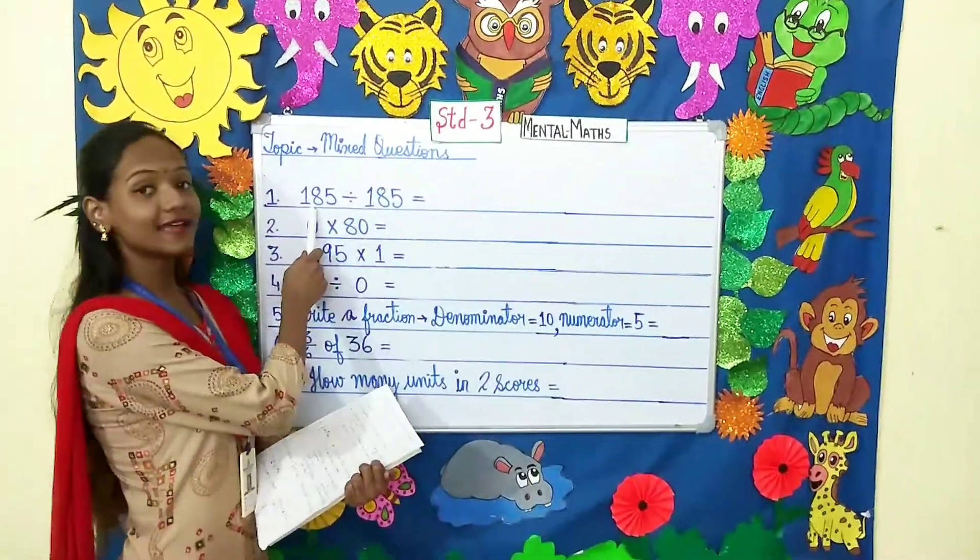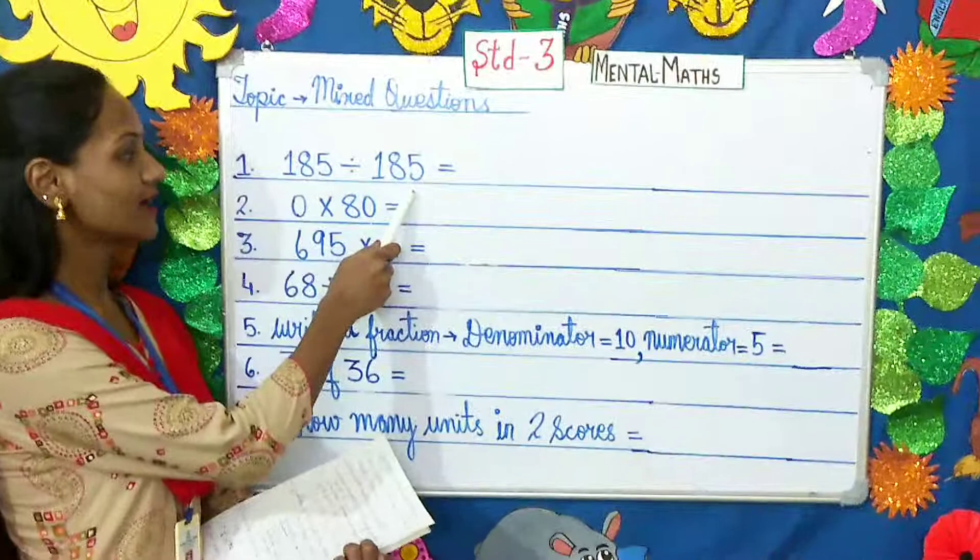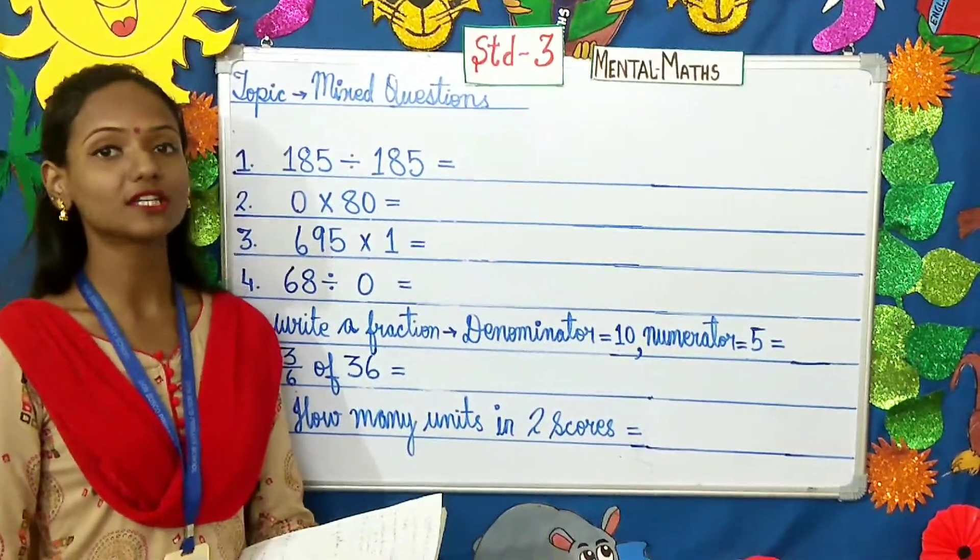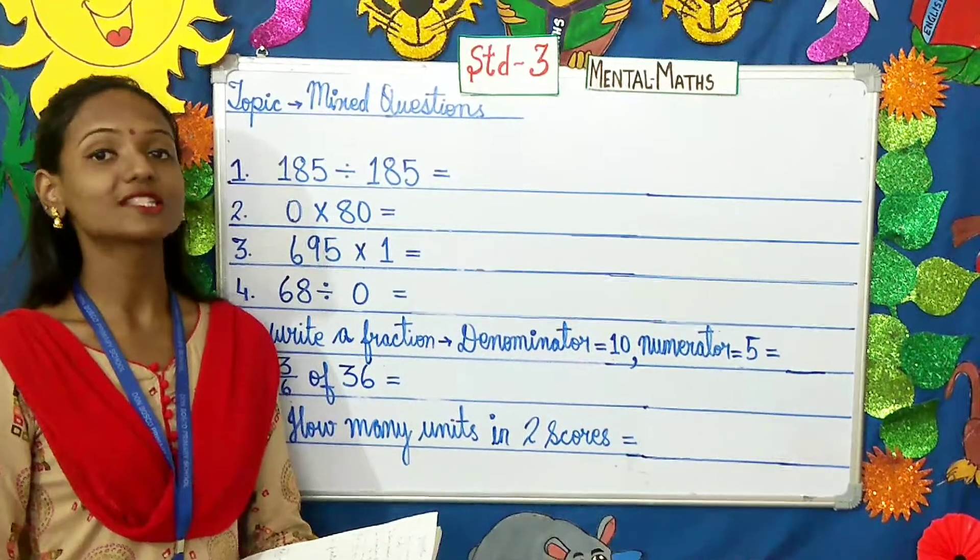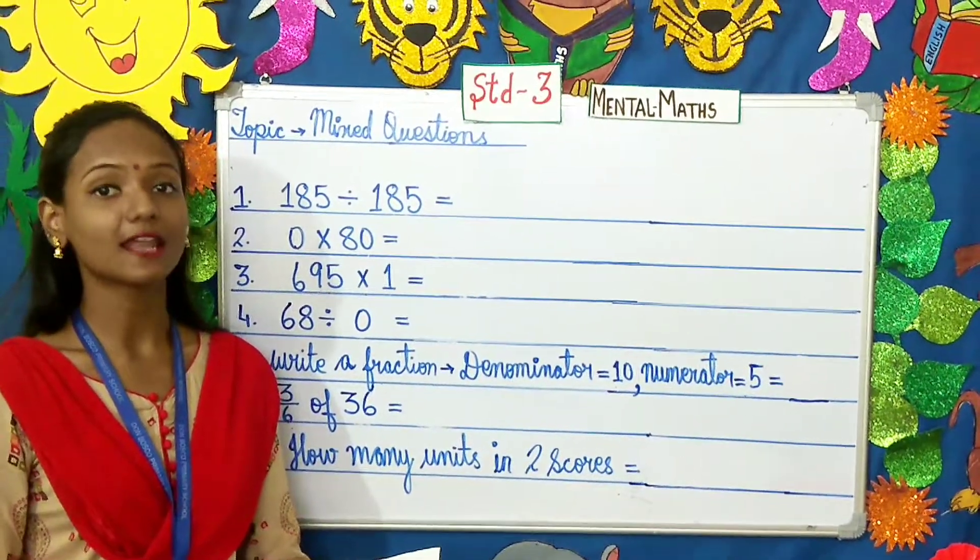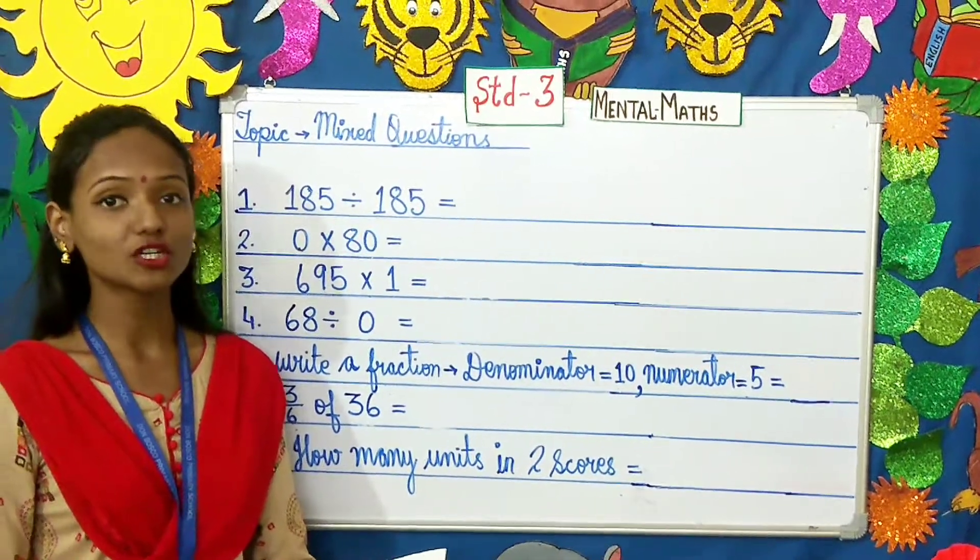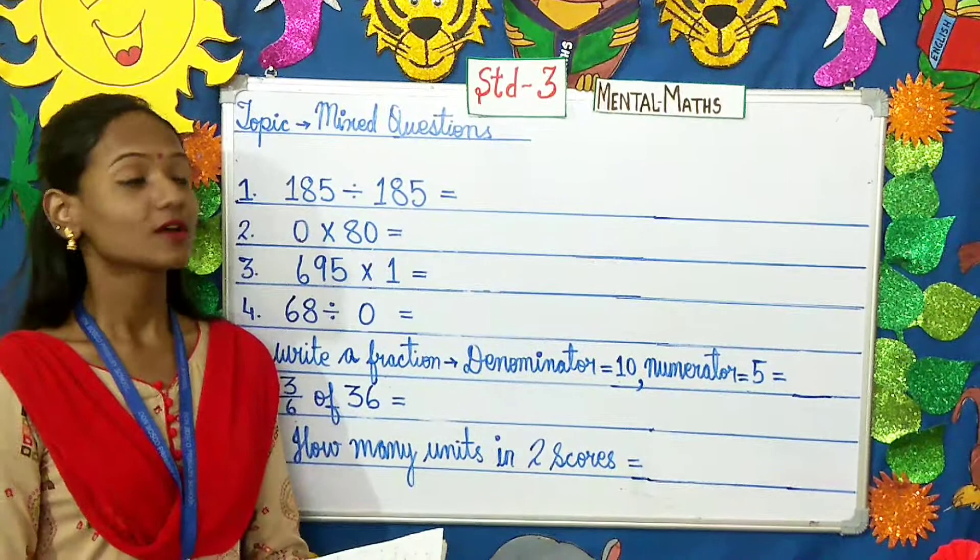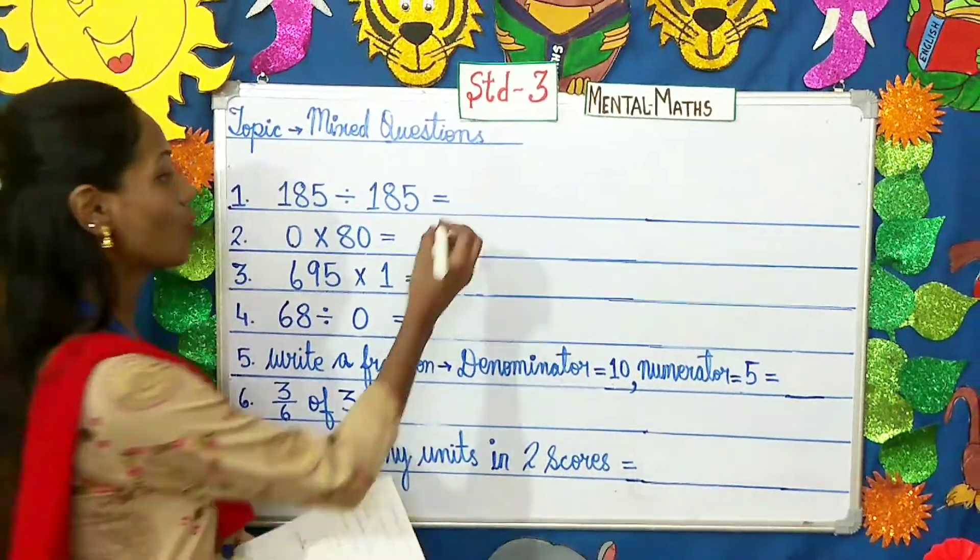185 divided by 185. Here children, we are talking about properties of division. You must have studied that any number divided by the number itself, the quotient or the answer will be 1. So, here the answer will be 1.